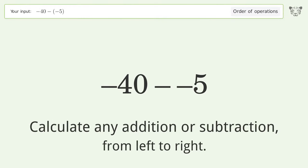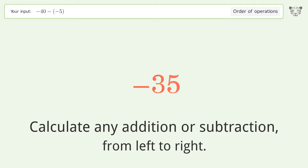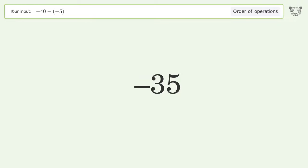Calculate any addition or subtraction from left to right. Minus and minus make a plus, so negative 40 plus 5 equals negative 35. The final result is negative 35.